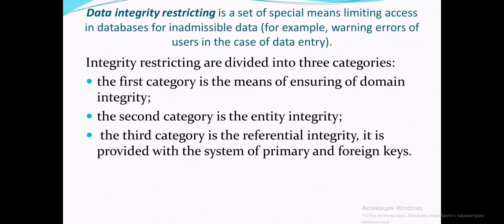The first category is the means of ensuring of domain integrity. The second category is the entity integrity. The third category is the referential integrity, provided with the system primary and foreign keys.